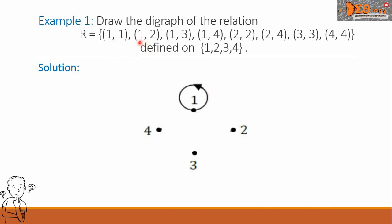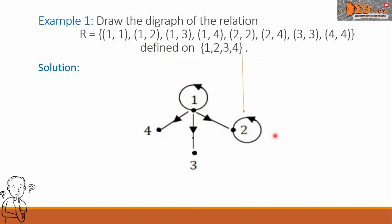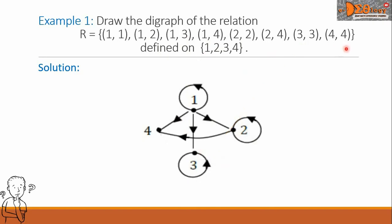Next is the ordered pair (1,2): draw an arrow from point 1 to point 2. For (1,3), draw the arrow. For (1,4), draw the arrow. For (2,2), we draw a loop on point 2. For (2,4), draw an arrow from point 2 going to point 4. For (3,3), draw another loop on point 3. Then the ordered pair (4,4) represents a loop on point 4.